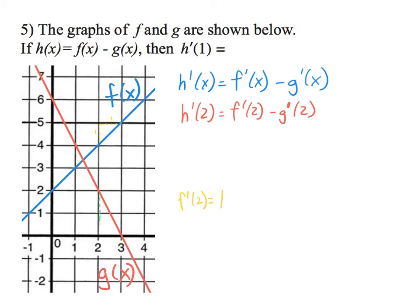For the other graph we're going down 2 over 1 for the g(x). We're going 2 over 1, so g(2) equals -2 because we're going down. Can we now plug those values in? f'(2) is 1 minus -2, which equals 3. So my answer here is 3.